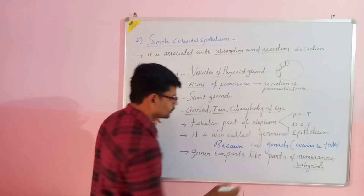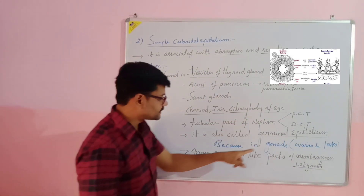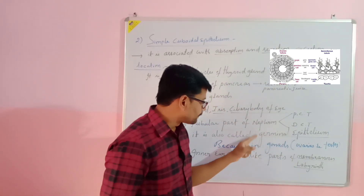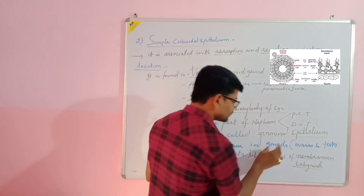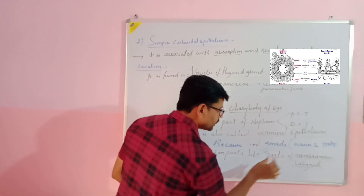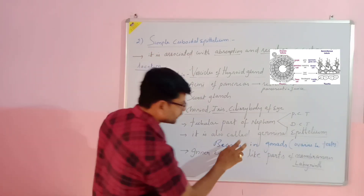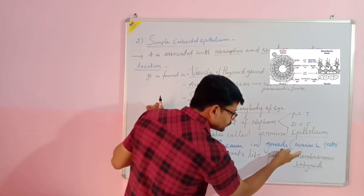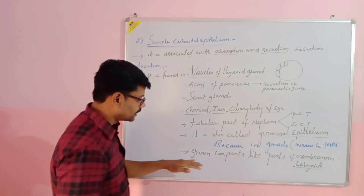Simple cuboidal epithelium is also known as germinal epithelium because it is present in the gonads. In females, the gonads are ovaries; in males, they are testes. Ovaries produce ova and testes produce sperms. The simple cuboidal epithelial cells get modified into germinal epithelium, which helps form sperms and ova.